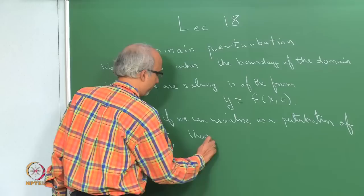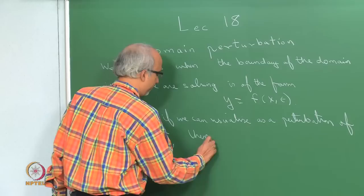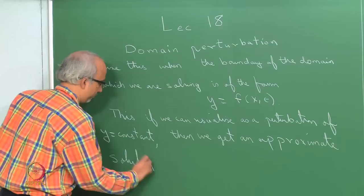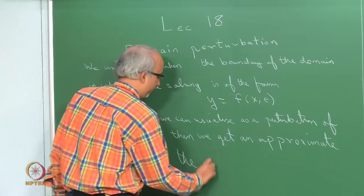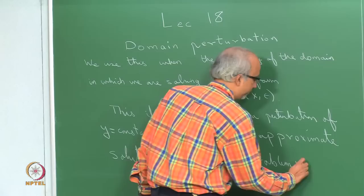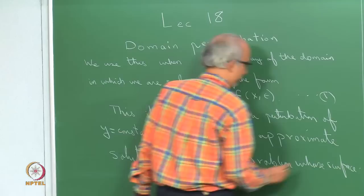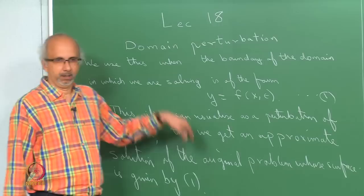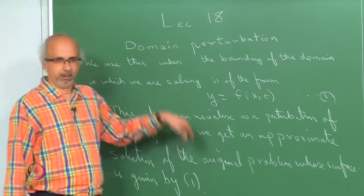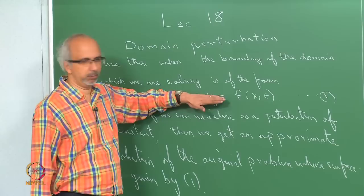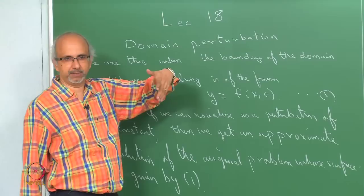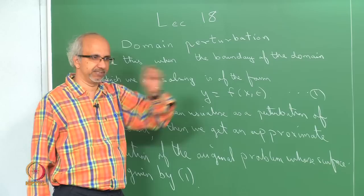So then we get an approximate solution to the original problem. Whenever the small parameter occurs in the differential equation, those were what we called regular perturbation problems. Here, the small parameter is actually occurring in the definition of the surface which is defining my boundary.